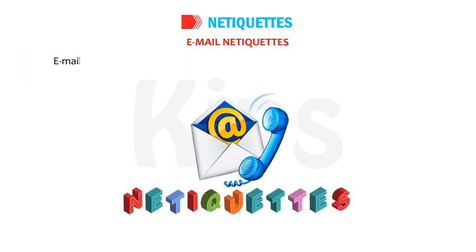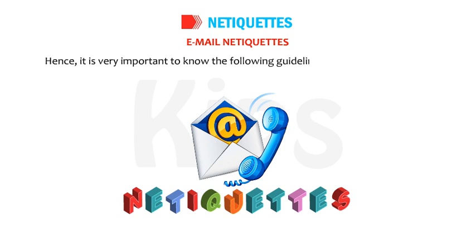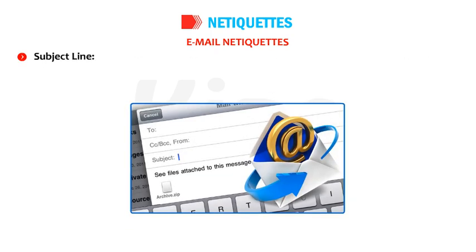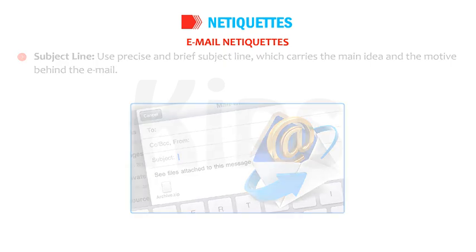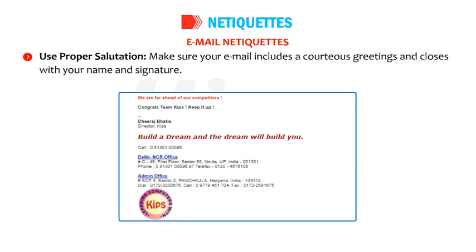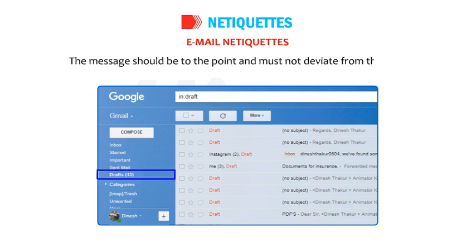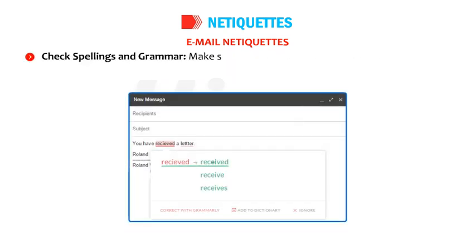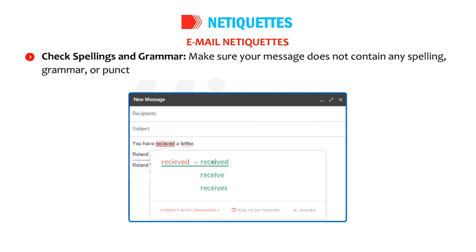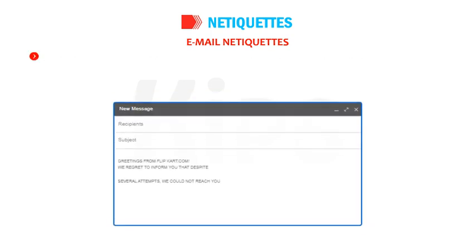Email netiquettes: email is considered the most common way of communication at the workplace, so it is important to follow certain guidelines. Use a precise and brief subject line that carries the main idea and motive behind the email. Make sure your email includes a courteous greeting and closes with your name and signature. Try to be precise and non-repetitive; the message should be to the point and must not deviate from the topic. Check spellings and grammar — ensure your message does not contain spelling, grammar or punctuation errors, as overlooking basics leaves a bad impression on the recipient.